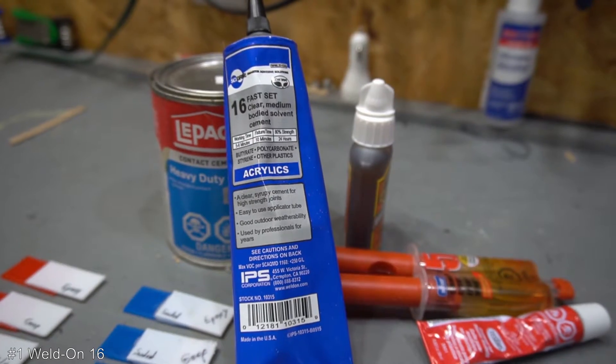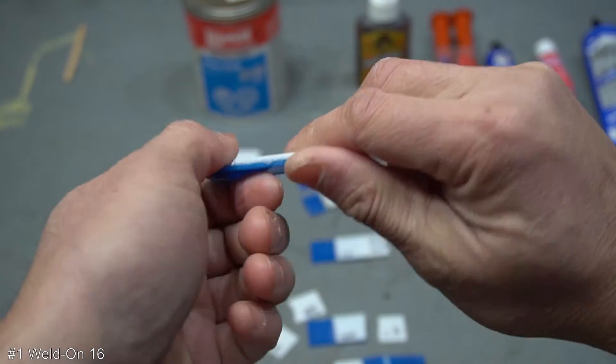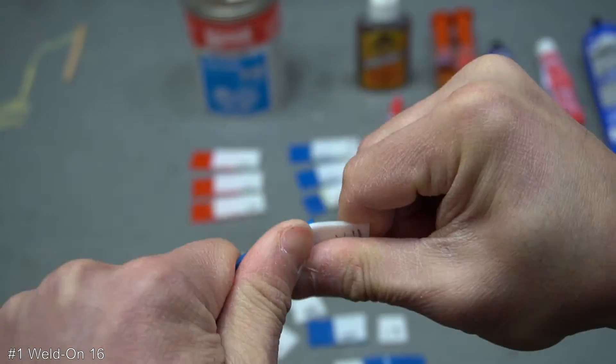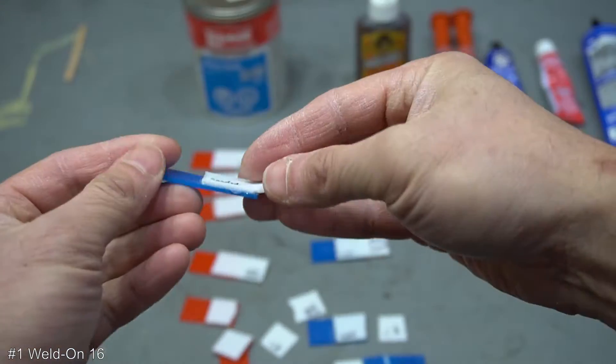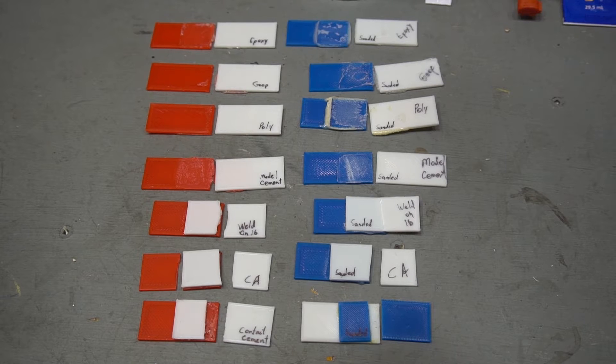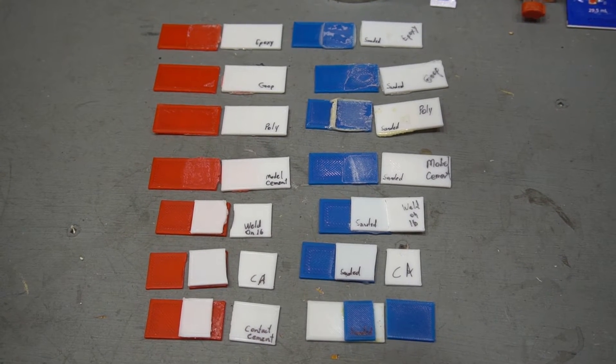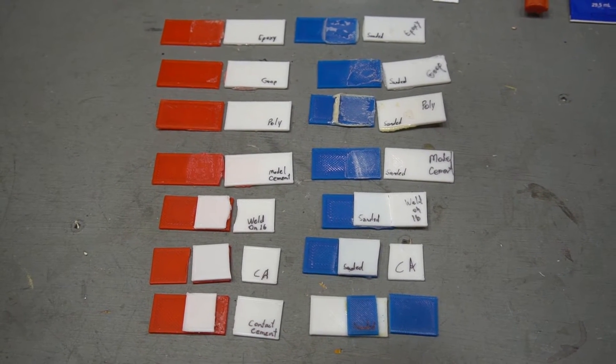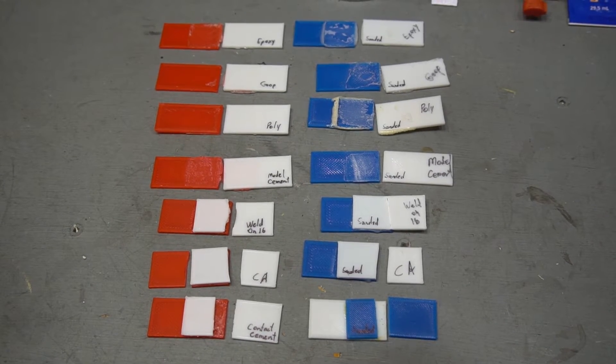So that leaves in the number one spot, Weldon 16. This stuff here is really strong and actually melts the PLA and forms a very solid bond between the PLA pieces. I've used it on a few different projects and it works on polycarbonate and acrylics too. So that's nice. Honestly though, the top three glues all perform excellent with CA and contact cement really surprising me and epoxy and polyurethane really disappointing me. I thought they would actually do a lot better than that.